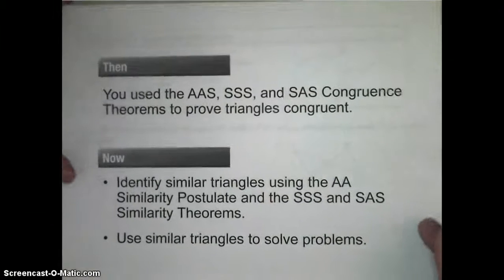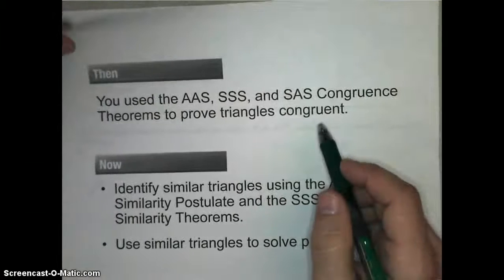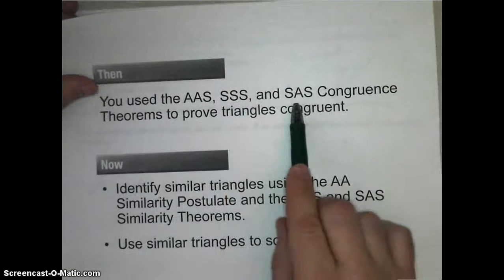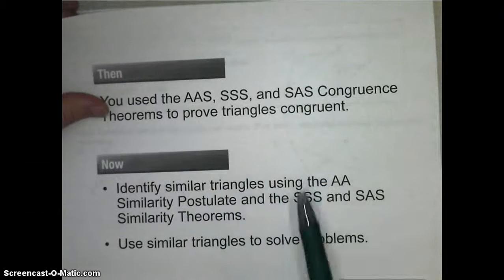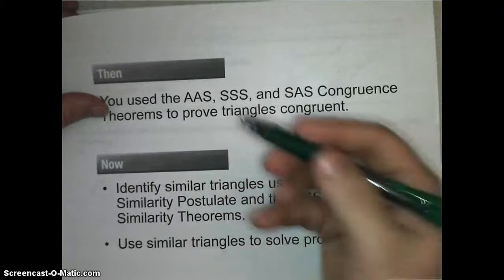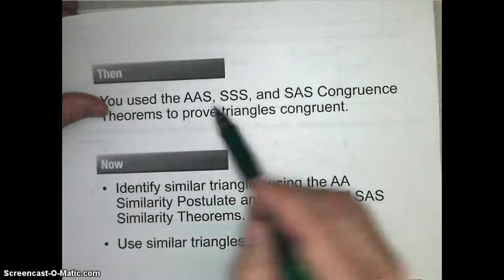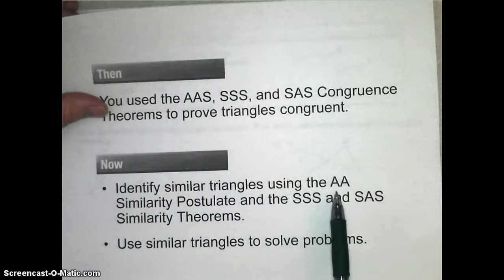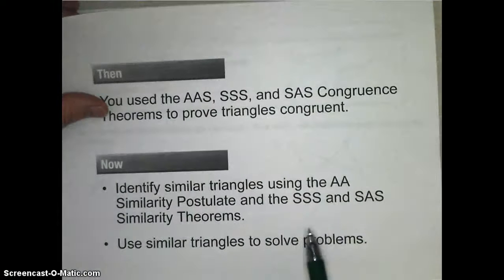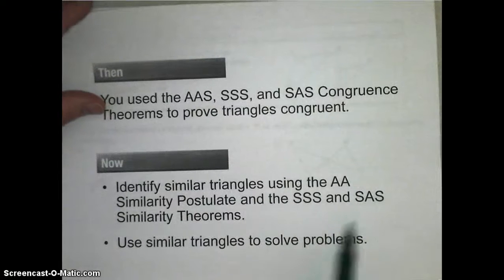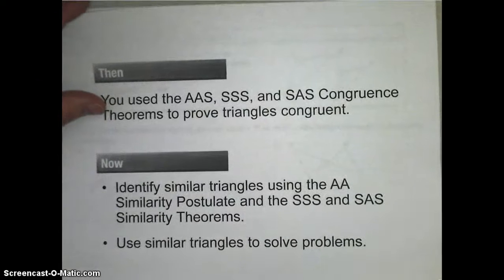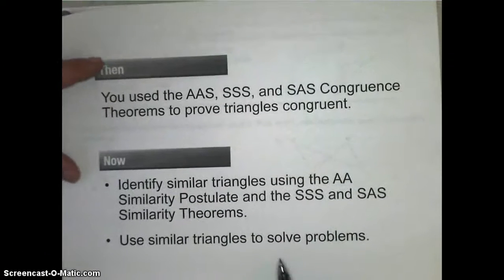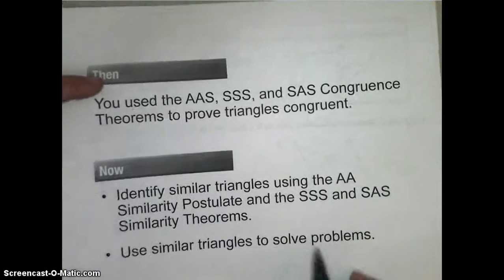There's not a whole lot of vocab, so we're going to jump right into it. Let's look at our objectives. Previously, we've used angle-angle-side, side-side-side, and side-angle-side congruence theorems to prove that triangles are congruent. Well, now we can use similar statements to show that triangles are similar. We're going to use the angle-angle similarity postulate and side-side-side and side-angle-side similarity theorems to prove that triangles are similar or verify that they're similar. We're also going to use similar triangles to solve problems.